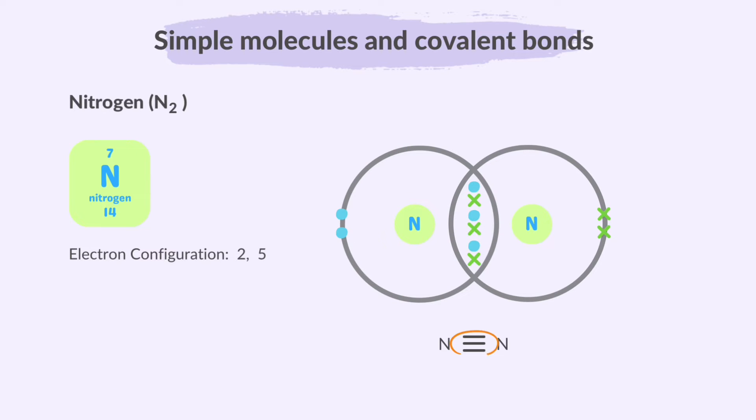In the case of nitrogen, a triple bond forms when two nitrogen atoms share three pairs of electrons. This sharing results in a stable N2 molecule held together by a triple covalent bond.